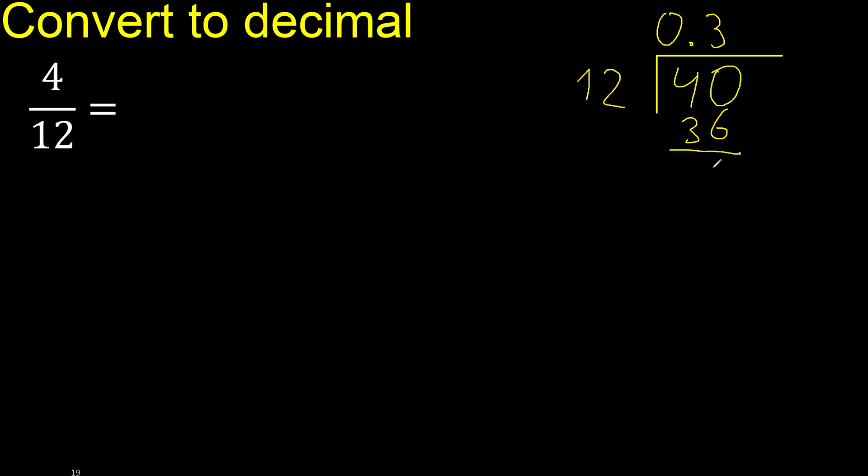40 minus 36 is 4. Next, there is not number, therefore complete. Always complete with 0. 40, 12 multiplied by 3, subtract, complete.